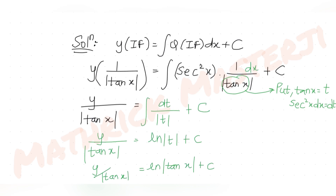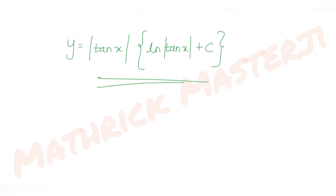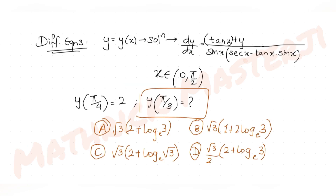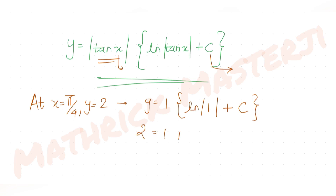So the general solution is y/|tan x| = ln|tan x| + C, which gives y = |tan x| · (ln|tan x| + C). To find C, I apply the condition y(π/4) = 2: tan(π/4) = 1, so |tan(π/4)| = 1, and ln(1) = 0. This gives 2 = 1 · (0 + C), so C = 2.